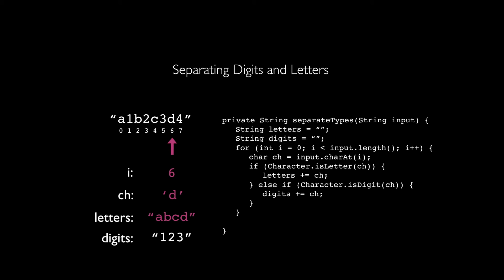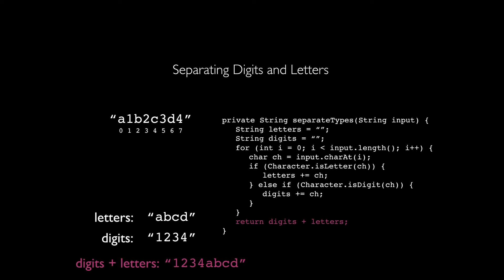We continue progressing through the string. Once the for loop completes, i goes out of scope, and all we have left are the letters and digits strings built before the loop started — letters as ABCD and digits as 1234. All that's left is to combine them. We return digits + letters so we get the digits first, then the letters. Concatenating them gives us 1234ABCD, and that new combined string is returned.